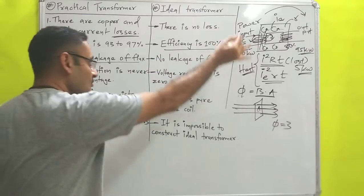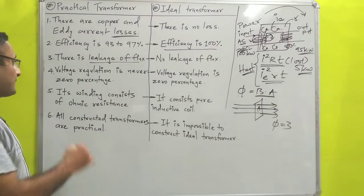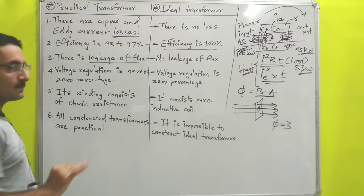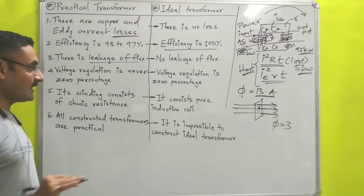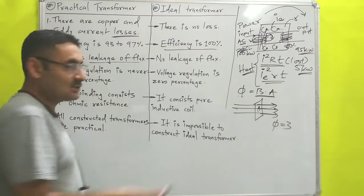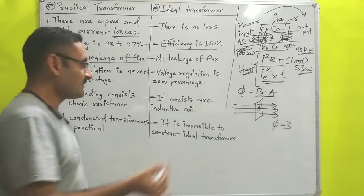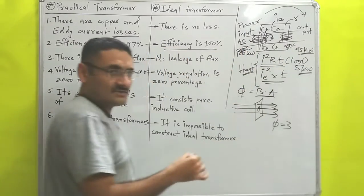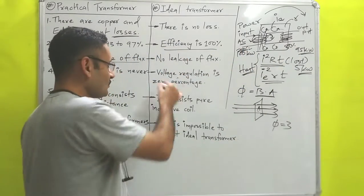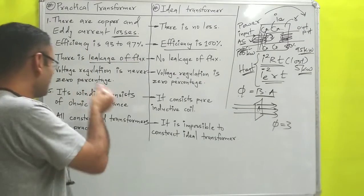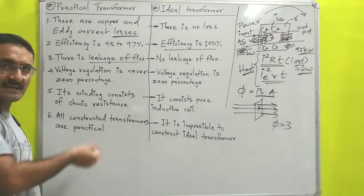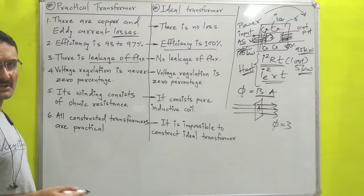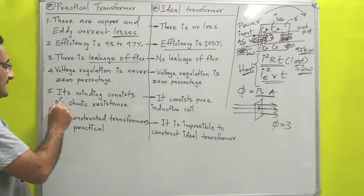In an ideal transformer there is no flux leakage, so 100% efficiency is achieved. Next, voltage regulation is never zero percent for a practical transformer because efficiency is less than 100%. For an ideal transformer, voltage regulation is zero percent because efficiency is 100%.